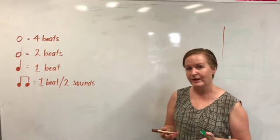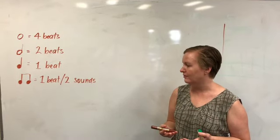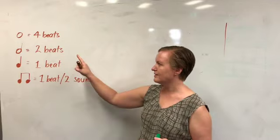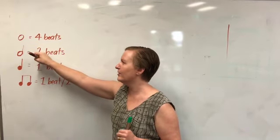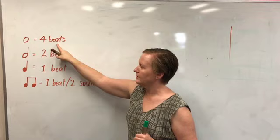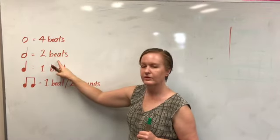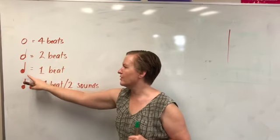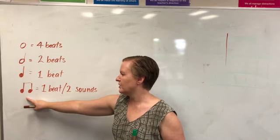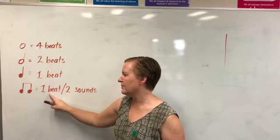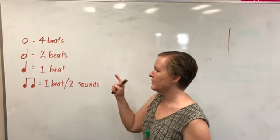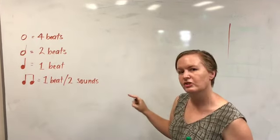I thought we might start today with a rhythm dictation and I'm going to be using these notes. You will have seen these before: a semi-breve worth four, minim worth two, crotchet worth one beat, and a pair of quavers which are equal to one beat but there's two sounds in that one beat. So those are the ones I'm going to choose from.